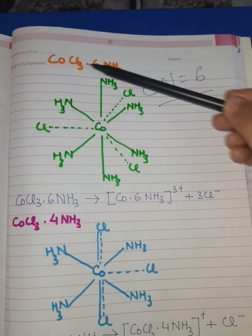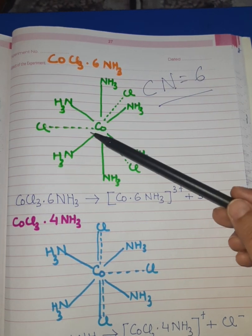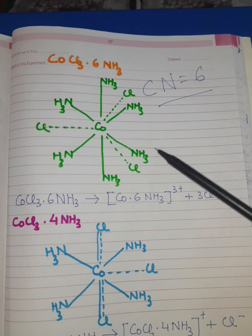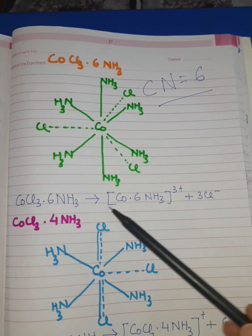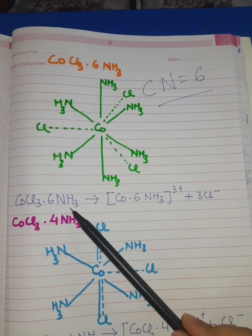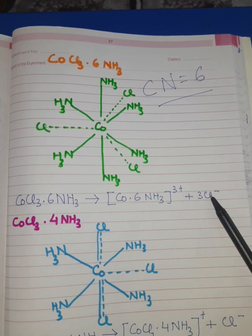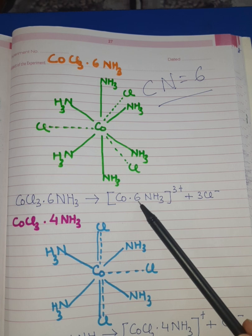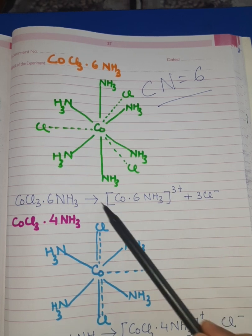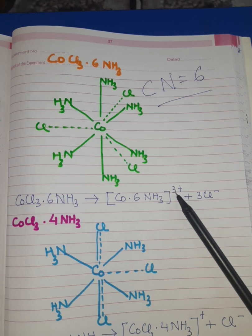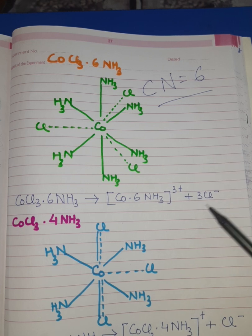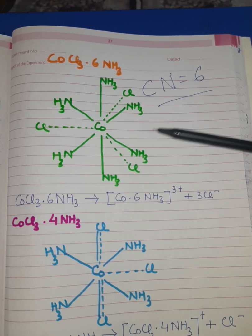The 3 Cl⁻ that are left are bonded to cobalt with the help of primary valency, which are ionizable and shown by dotted lines. This concept can also be understood with the help of the ionization equation of the compound. On dissolving in water, the compound ionizes to give two ions. The first is a positive ion where cobalt is bonded with 6 ammonia molecules, carrying a tri-positive charge as a single entity. The negative ions are 3 Cl⁻, which clearly corresponds to the structure.